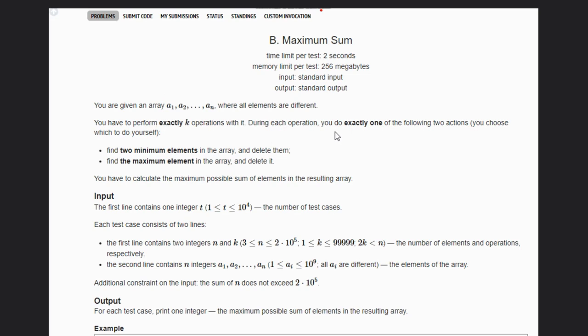During each operation we have to do exactly one of the following two actions: either we choose two minimum elements in the array and delete them, or we can choose one maximum element and delete it.